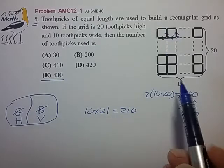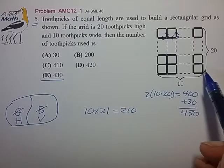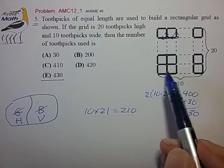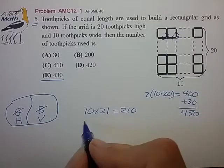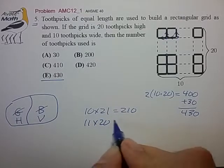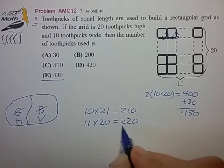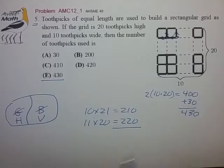And for the vertical toothpicks, we have columns that are 20 toothpicks each, and we have 11 such columns. So that's 11 by 20, and that's 220, and that counts all the toothpicks. There's nothing left over.